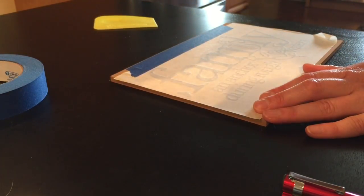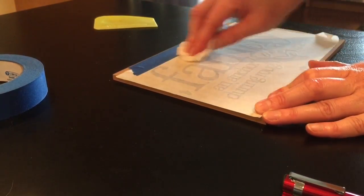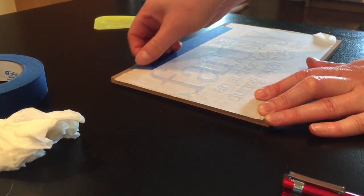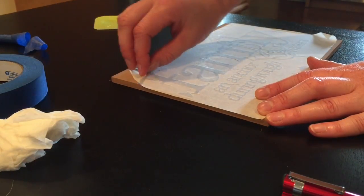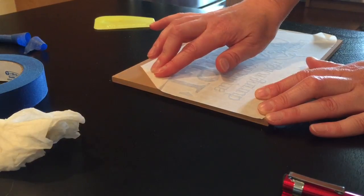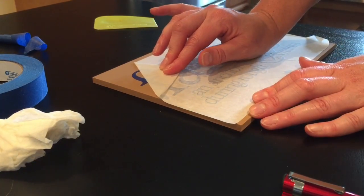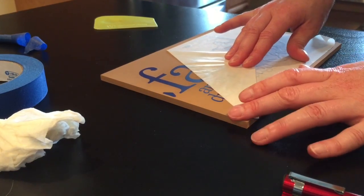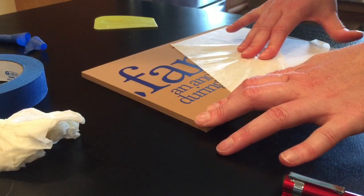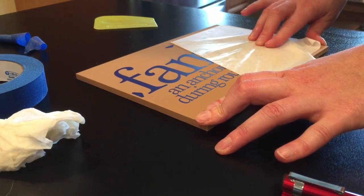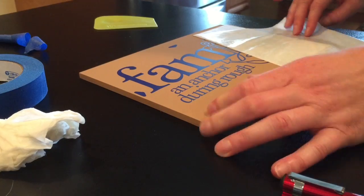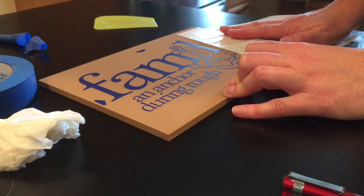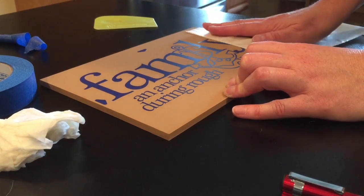Next, use the wet paper towel and go over the expression over the transfer tape. Then remove your painters tape and slowly peel back the transfer tape. I like to keep the transfer tape close to the surface of the board so the letters don't come off with it.